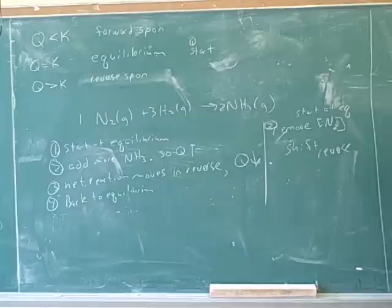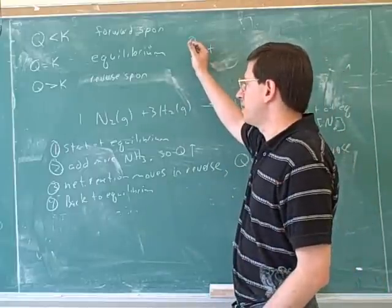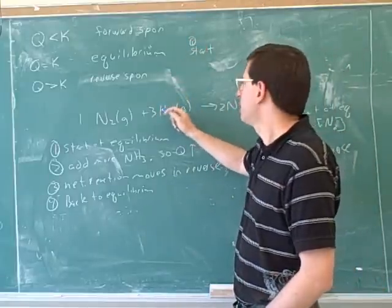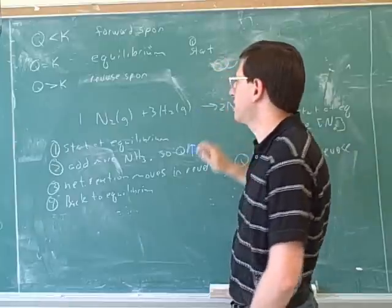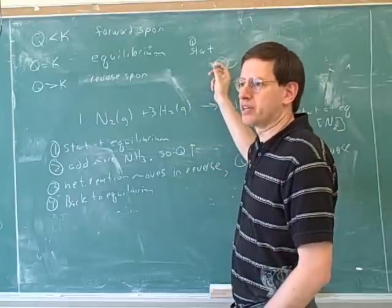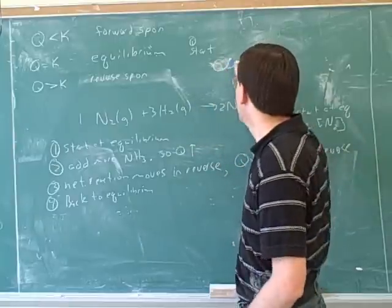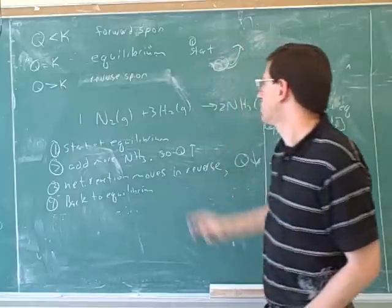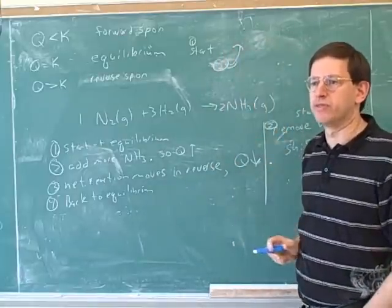Again, in terms of the table, what's happening here is we started in equilibrium. Now, when we remove a starting material, that makes Q bigger again, because the starting materials are in the denominator. A smaller denominator means a bigger fraction, and then nature wants to move us back here by moving us into reverse again.